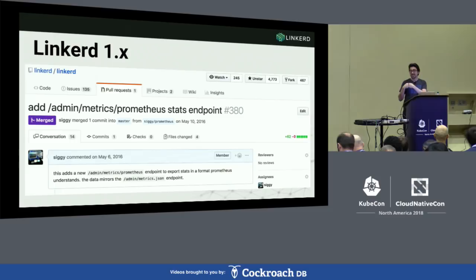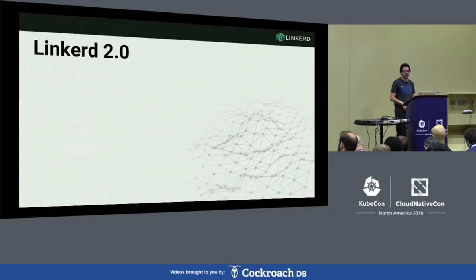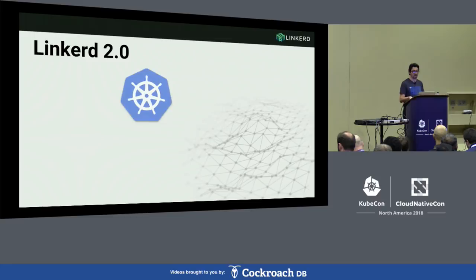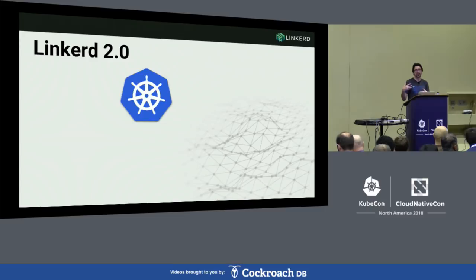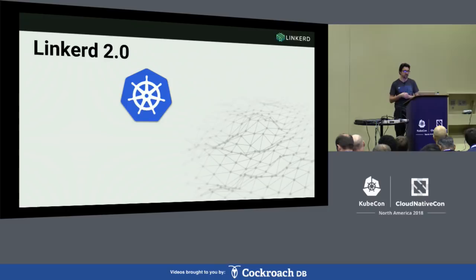Fast forward to about a year and a half ago, and we started thinking about Linkerd 2. We made the jump to do a complete from-the-ground-up rebuild, and I'll walk through a few of the motivations. One was the Kubernetes ecosystem — the excitement around this community is insane. While Linkerd 1 could run anywhere, which was great, the downside is it made configuring it super complicated. You had to come up with a pretty complex config file and it wasn't an easy out-of-the-box setup. Targeting specifically Kubernetes made configuration orders of magnitude simpler.